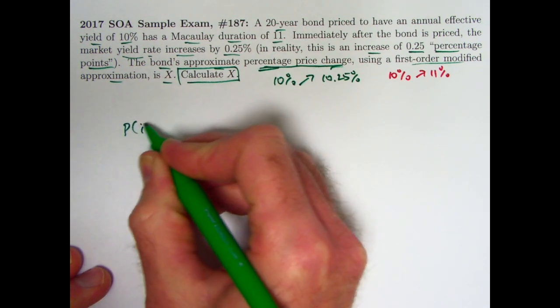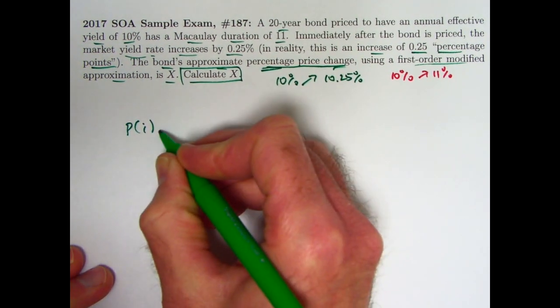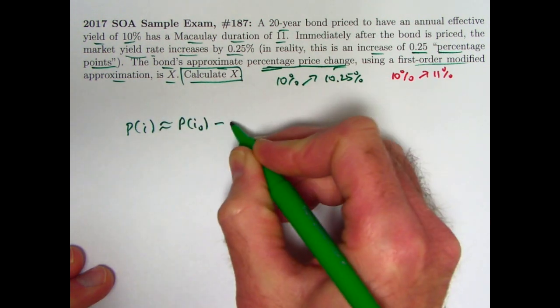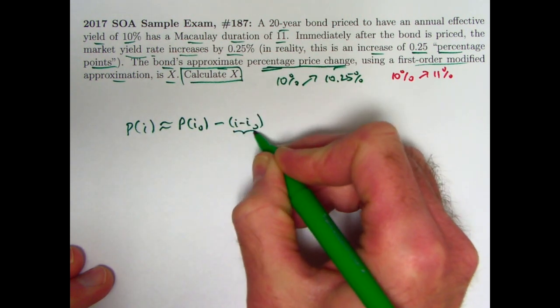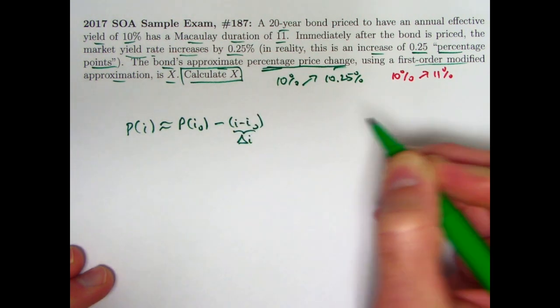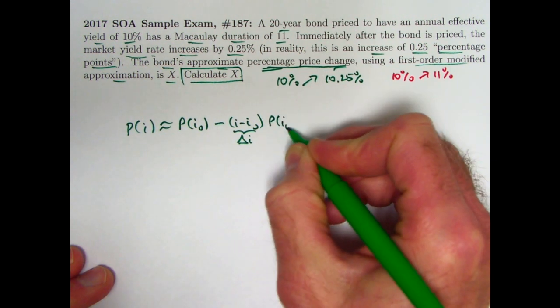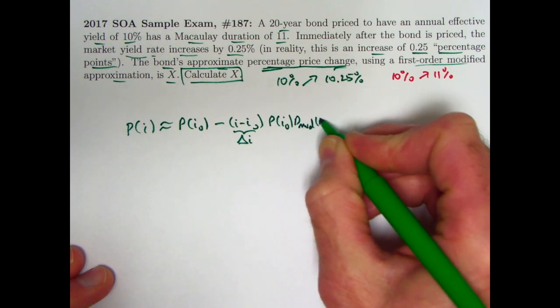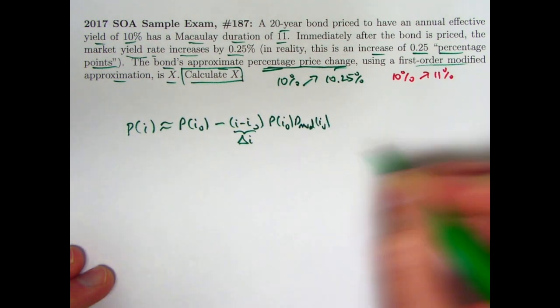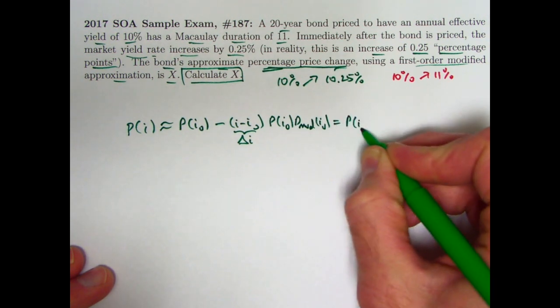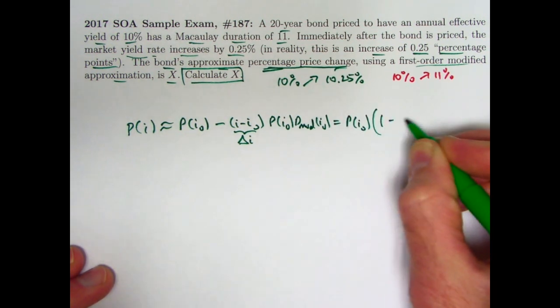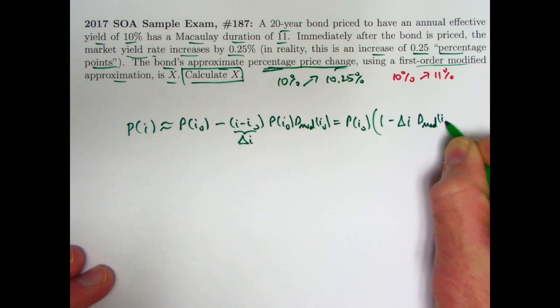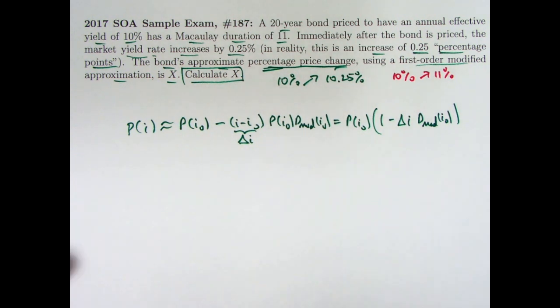The approximation can be written that the price at yield rate i is approximately the price at yield rate i₀, minus (i minus i₀), which is the change in the interest rate, you could call that delta i, times the price at yield rate i₀, times the modified duration at yield rate i₀. You could also factor out the P(i₀) out of this, and write it in this way.